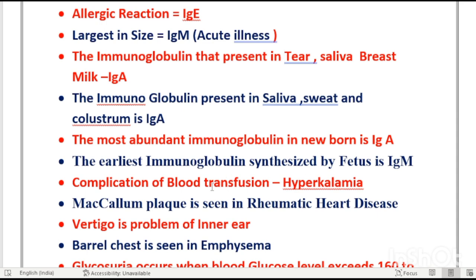Complication of blood transfusion: hyperkalemia. When blood is transfused to a patient, the potassium level can rise. Normal potassium level is 3.5 to 5.1 milliequivalents per liter.